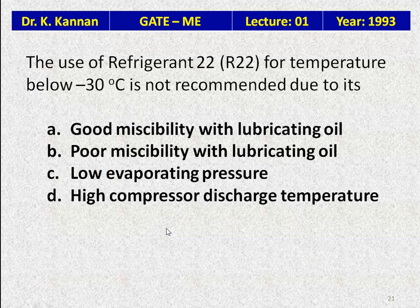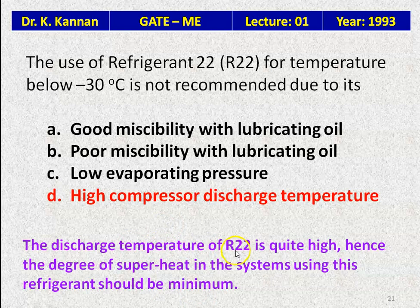Question 20: The use of refrigerant R22 for temperatures below −30°C is not recommended due to — good miscibility with lubricating oil; poor miscibility with lubricating oil; low evaporating pressure; or high compressor discharge temperature. The answer is high compressor discharge temperature. The discharge temperature of R22 is quite high; hence the degree of superheat in the system using this refrigerant should be minimum.